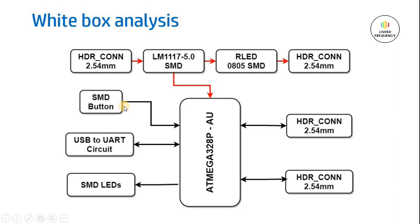We will be using an SMD button for the reset option, which is straightforward and easy to understand. Thereafter we will have a USB-to-UART converter circuit. Right now I have not yet decided which USB-to-UART converter to use — I prefer to go with the FT232 chip, but the CP2102 is also a good option, which we will decide during schematic design. Of course, ideally at the white box analysis stage you should already know which part number you are using, but I am keeping it open for now. The SMD LEDs will again be 0805 or 0402 package — also left open for now based on available space and size optimization. This is how our white box analysis looks like.